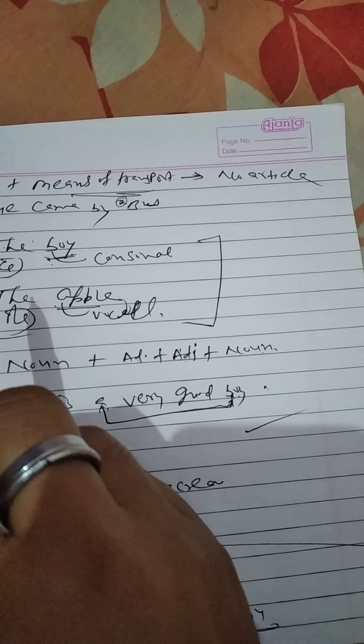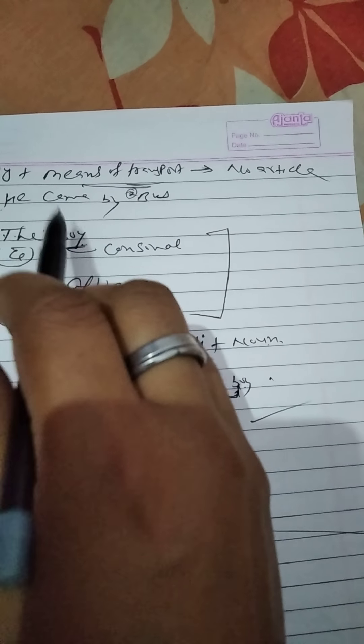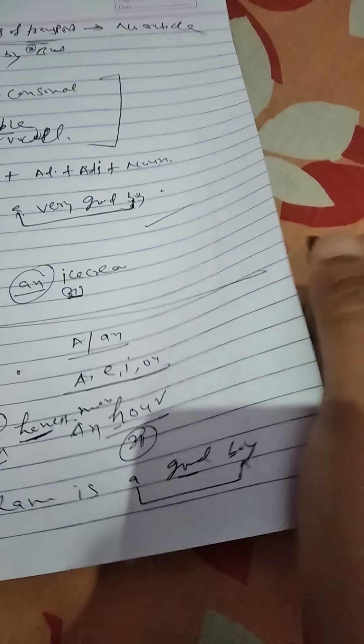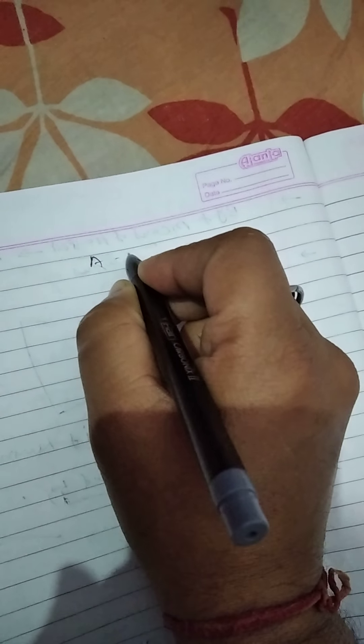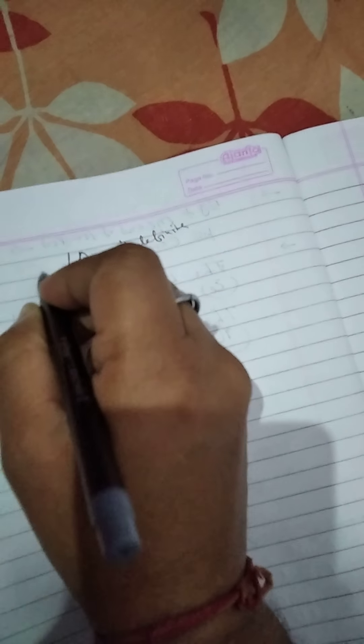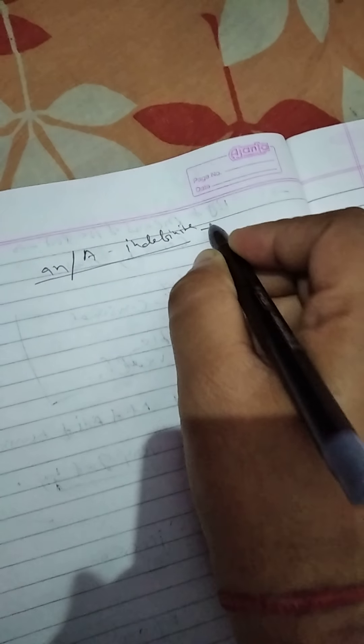When using means of transport with 'by,' we do not use an article. We say 'I have come by bus,' not 'I have come by a bus.' By plus mode of transport never takes any article. To summarize: A and AN are indefinite articles — you are not being specific about the item you are referring to.